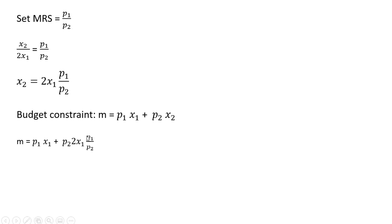We make a substitution into the budget constraint for x₂ using our earlier result: m = p₁x₁ + p₂(2x₁p₁/p₂). The p₂ terms cancel, leaving m = 3p₁x₁.